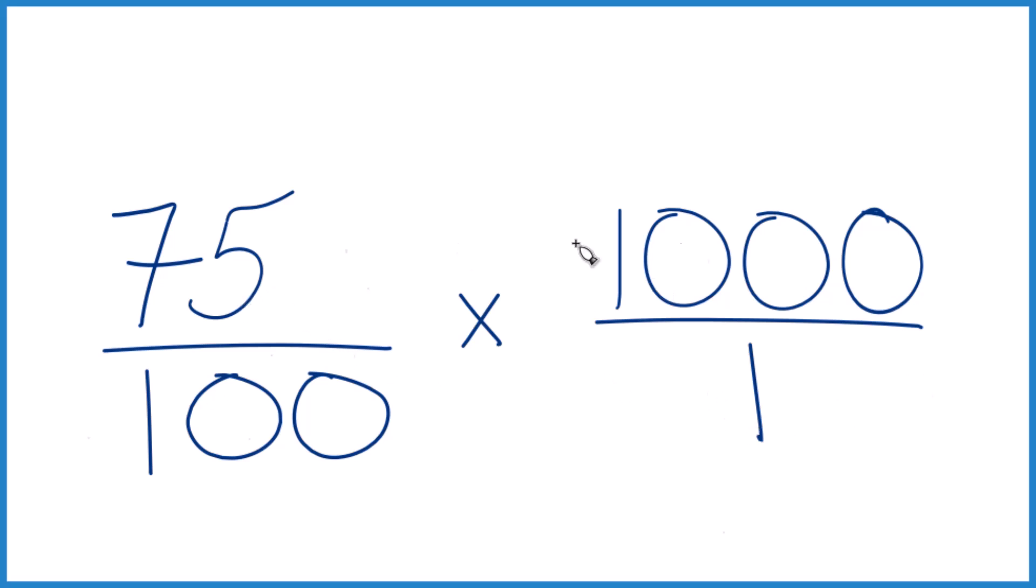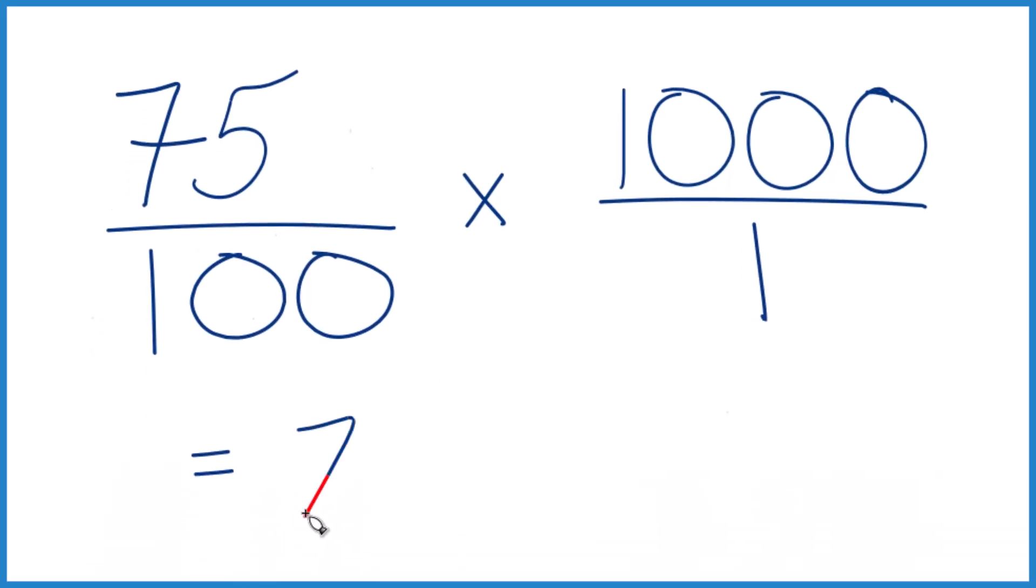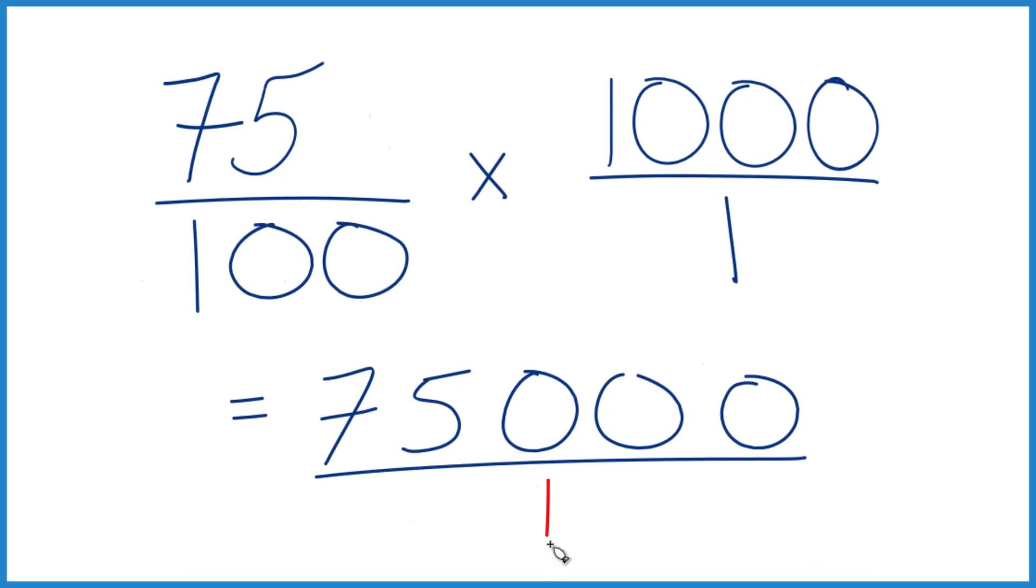75 times 1,000, that equals 75,000. And then 100 times 1, that equals 100. So when we divide 75,000 by 100, we get 750.